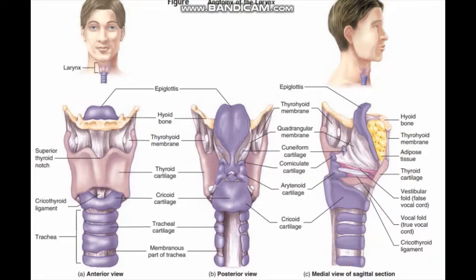The larynx is basically a membranofibrocartilaginous box situated above the trachea, in front of the fourth, fifth, and sixth cervical vertebrae.